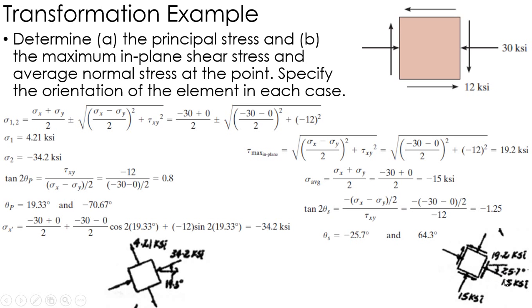At the negative 25.7, I have my negative 15 in all the directions, and then I have my 19.2 in my shear.